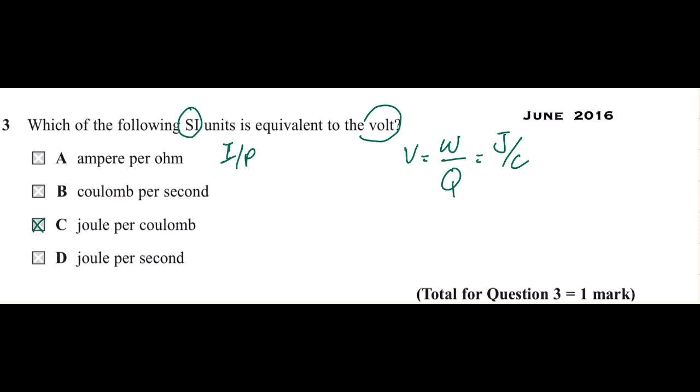For ampere, which is I over R, which is not the correct formula. Coulomb per second, which is I equals Q over T, is the definition of current. And for D, joule per second, work over time, which is power. So the correct answer is C.